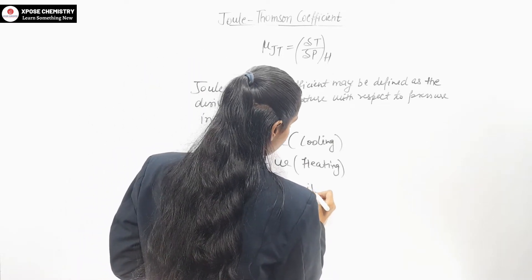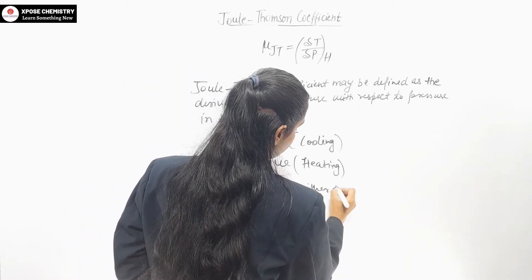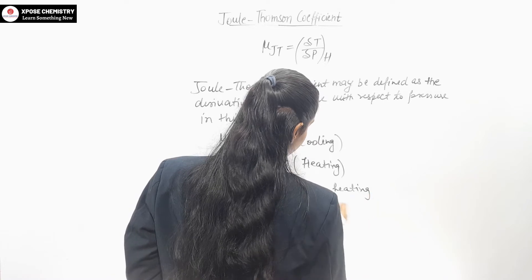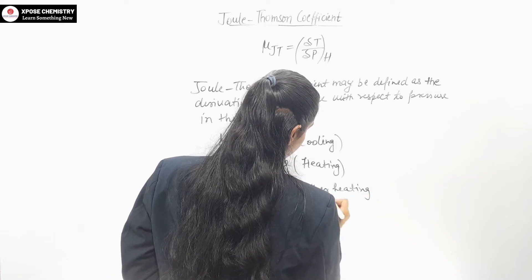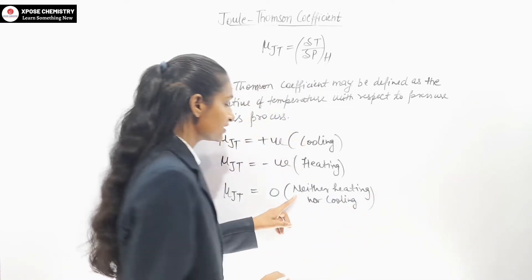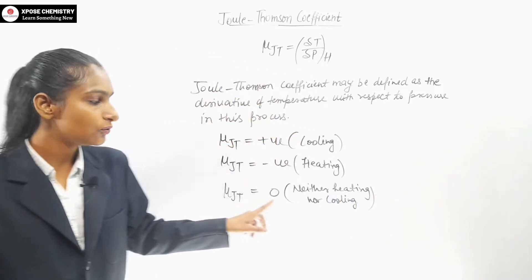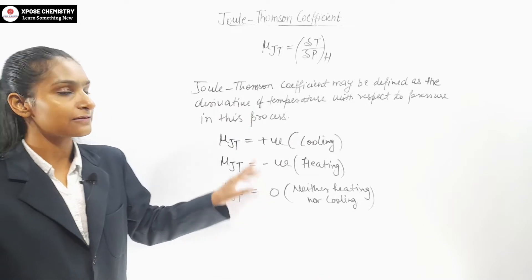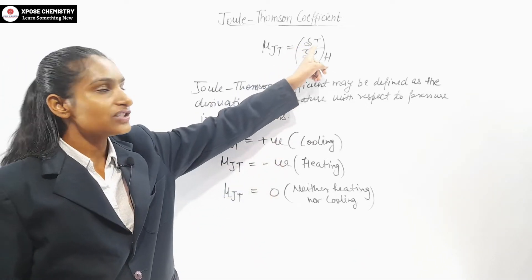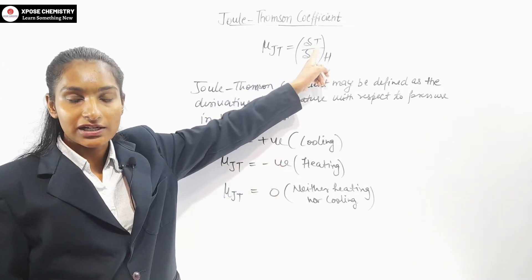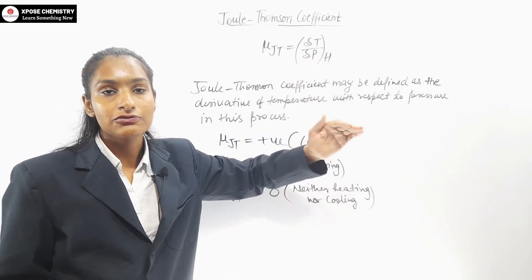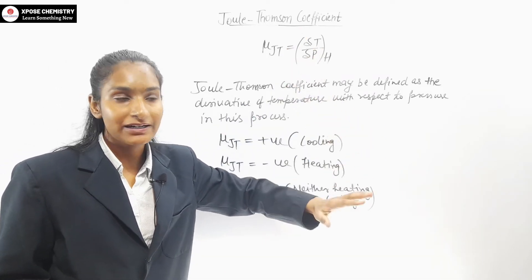When there is neither heating nor cooling, μJT will be zero. What is our change in temperature — if it is positive, negative, or zero — it will depend on that.